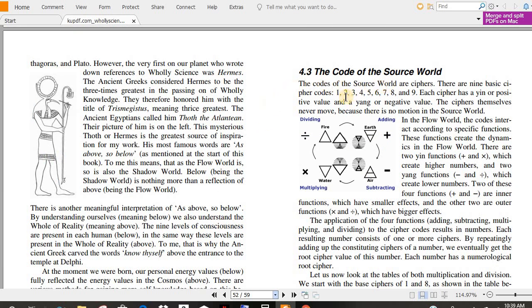Okay, the code of the source world. This is getting down to the nitty-gritty now. The codes of the source world are ciphers. There are nine basic cipher codes, 1 through 8 and 9. Each cipher has a yin or positive value and a yang or negative value. The ciphers themselves never move because there is no motion in the source world.